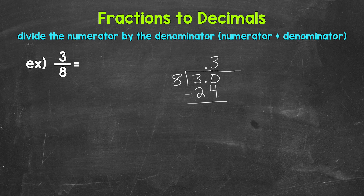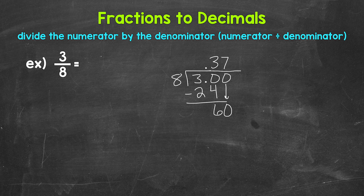Subtract: 30 minus 24 is 6. Now we don't have a clean-cut zero there at the bottom, so we can continue on by using another zero that we can bring down. Now we have 60 — 60 divided by 8. That's going to be 7, which gets us to 56. So we put 7 up top, and now we multiply: 7 times 8 is 56.